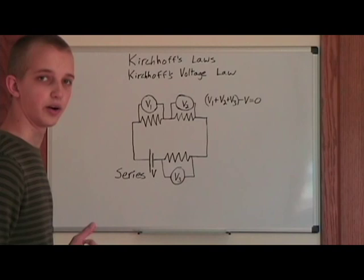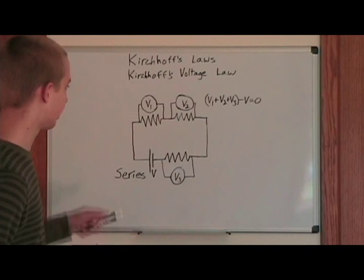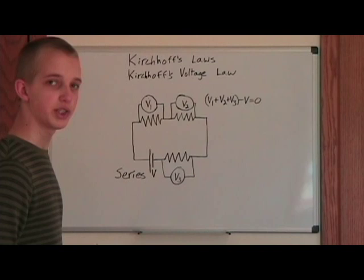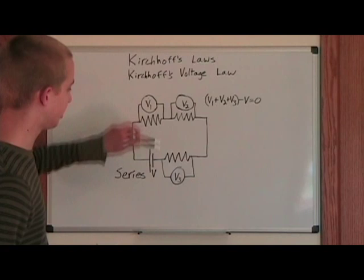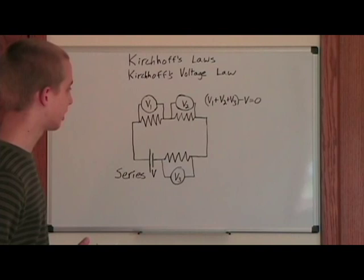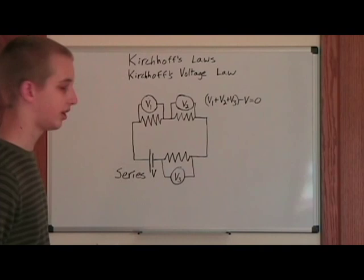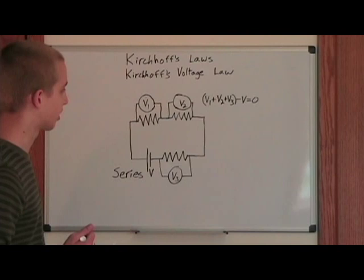Now, I'm going to talk about Kirchhoff's Voltage Law. As you can see here, we have a series circuit with three resistors, three voltmeters, and one battery. Kirchhoff's Voltage Law says that if you add up the voltages that these three voltmeters show — making sure to take into account polarity so that you don't end up with a negative number — and then subtract the supply voltage, you'll get zero. Stated formally, this means that the sum of the voltages across all resistances equals the supply voltage.